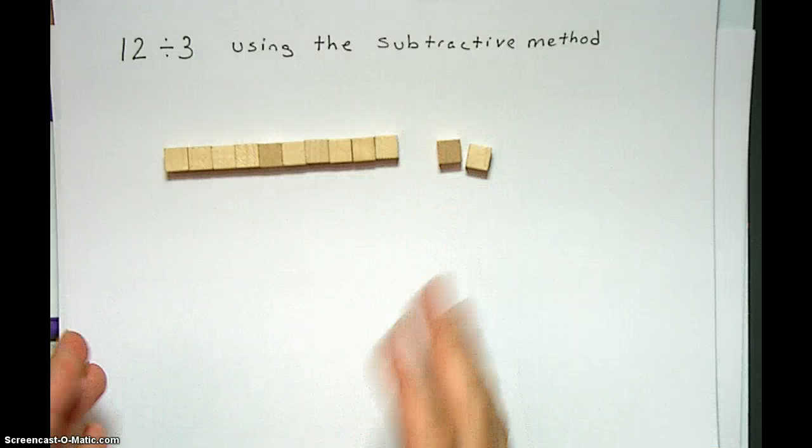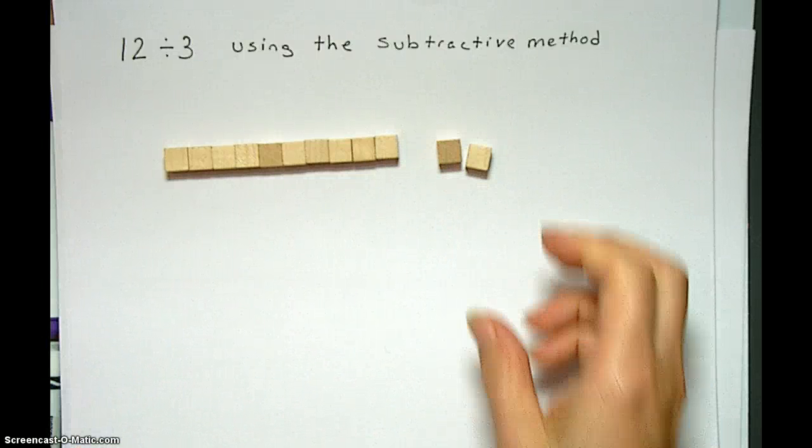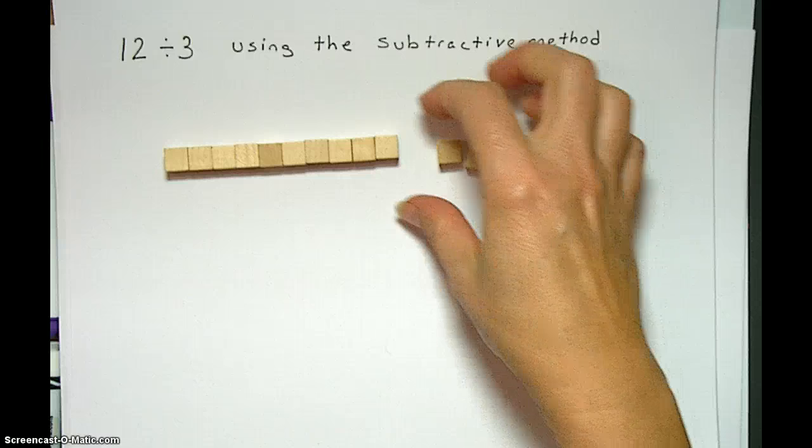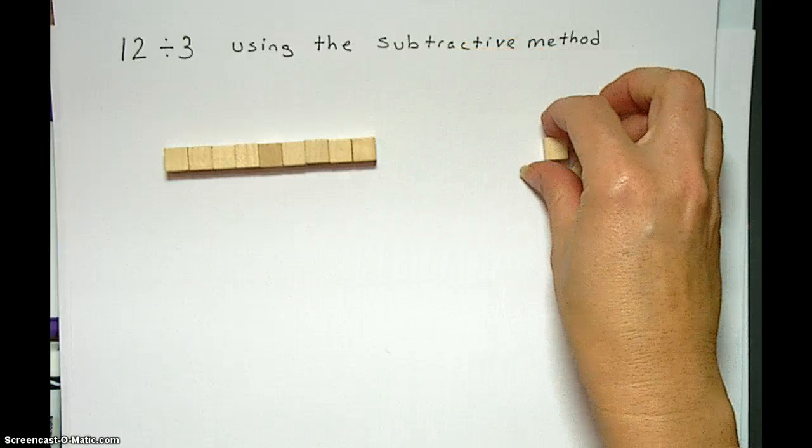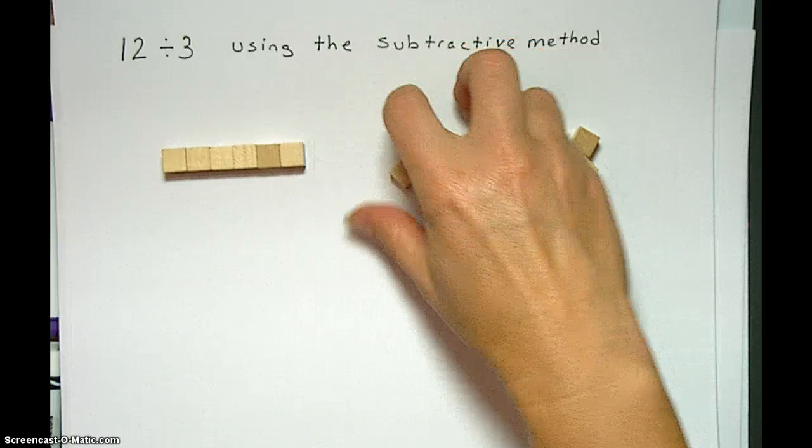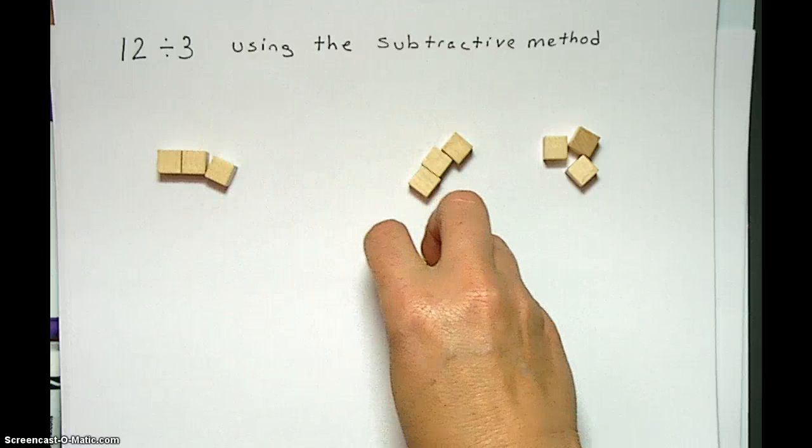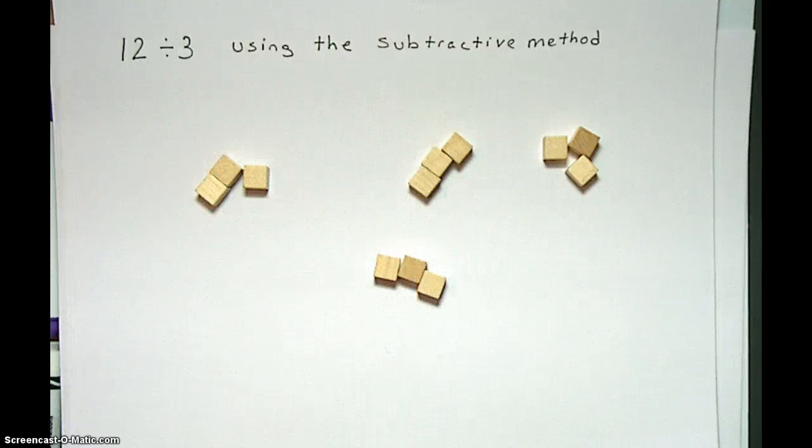So now we can deal with this. How many groups of 3 can we have? We're going to do this with repeated subtraction. Let's take away one group of 3, another group of 3, another group of 3, and we're left with a group of 3.